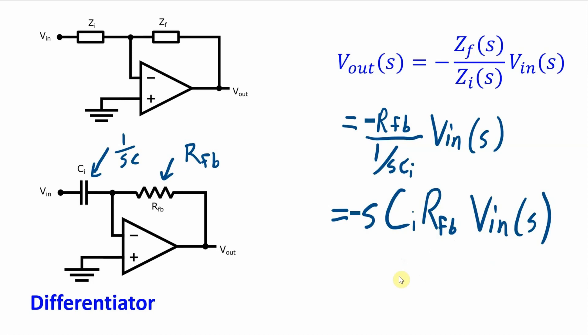So to convert this expression into the time domain, that inverse Laplace transform is going to take the time derivative of Vin times these two values which are a constant, which shows you by a different approach why this circuit is a differentiator.